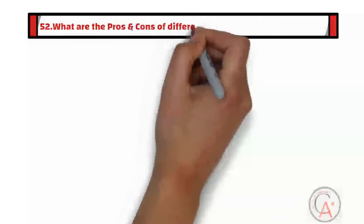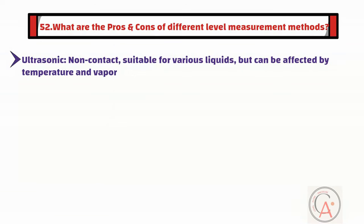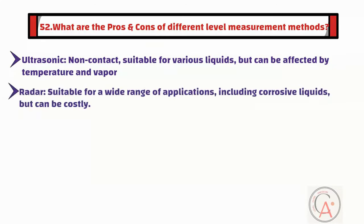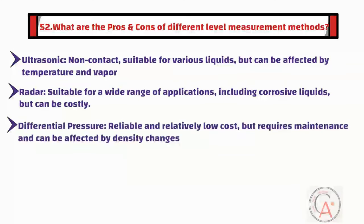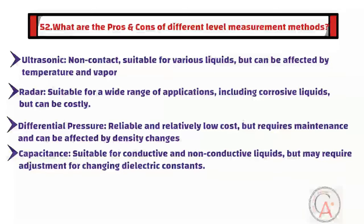Question fifty-two is: what are the advantages and disadvantages of different level measurement methods? Each level measurement method has its own set of advantages and disadvantages. For example, ultrasonic is non-contact and suitable for various liquids but can be affected by temperature and vapor. Radar is suitable for a wide range of applications including corrosive liquids but can be costly. Differential pressure is reliable and relatively low cost but requires maintenance and can be affected by density changes. Capacitance is suitable for conductive and non-conductive liquids. The choice of method depends on the specific application's requirements and conditions.